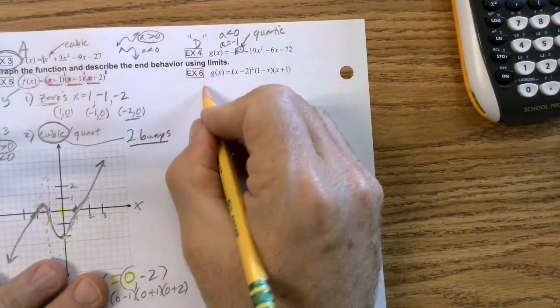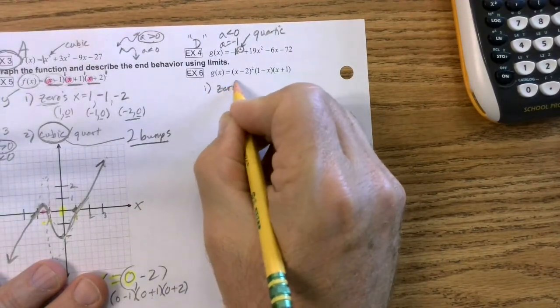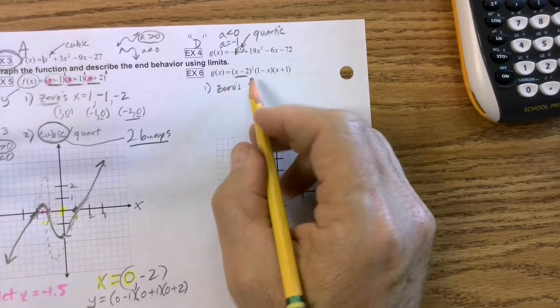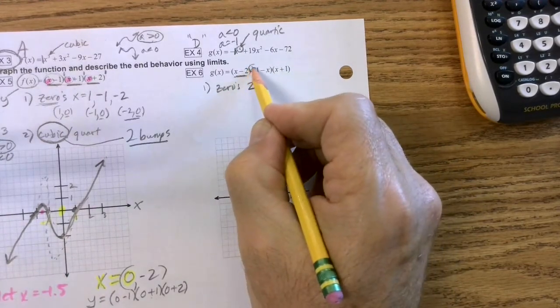So the first thing we're going to do is we're going to find our zeros. Well, we look at this, and we go, aha, it's a two. But notice this right here.